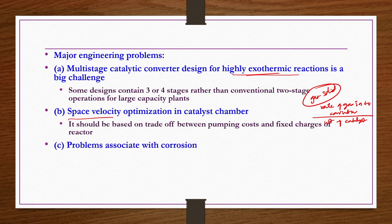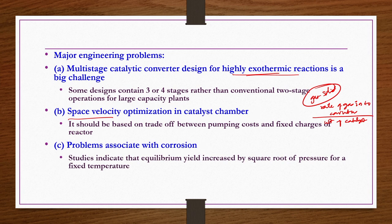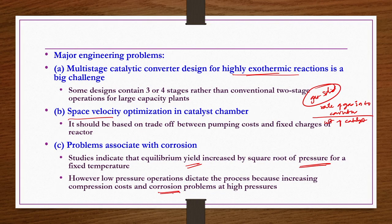Problems associated with corrosion: studies indicate that SO3 yield increases by the square root of pressure at a fixed temperature, so increasing pressure improves yield. However, higher pressure increases compression costs, requires additional expensive equipment, and causes corrosion. Because of these problems — compression cost and corrosion — higher pressures are generally not preferred despite the yield benefit.